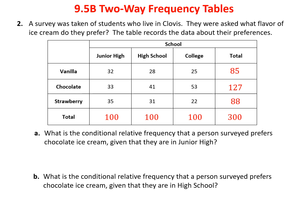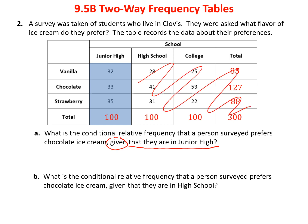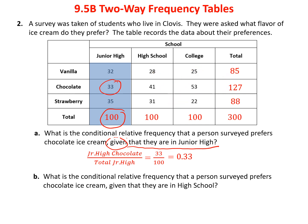The conditional relative frequency takes the joint frequency and divides it by either the column total or the row total, depending on the condition. Key word: condition — what's the given? Given that they were in junior high, all I care about is that column. The number of people who preferred chocolate in junior high was 33, out of a total of 100. So the conditional relative frequency is 33 over 100, which means 33% of junior high students preferred chocolate.